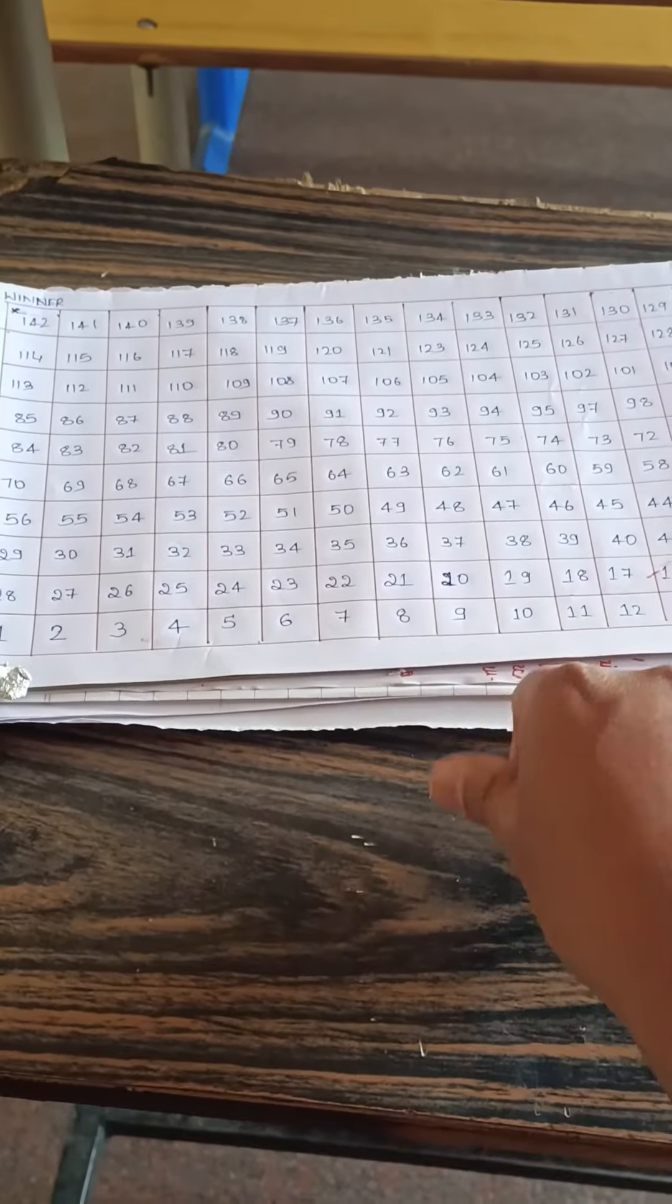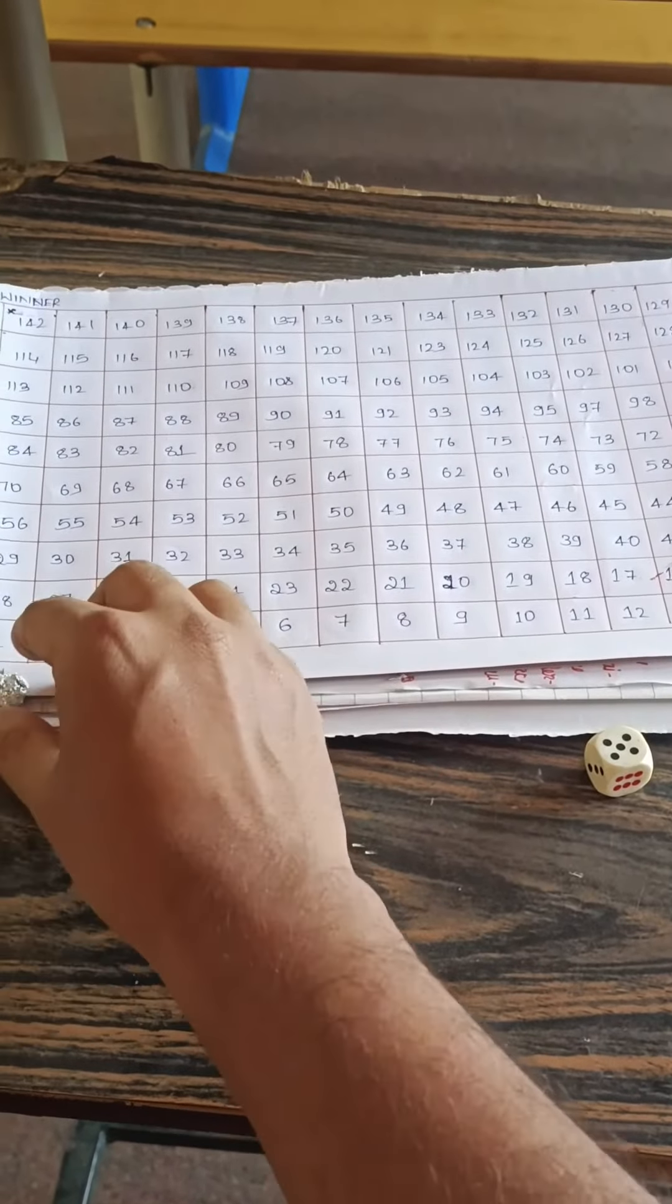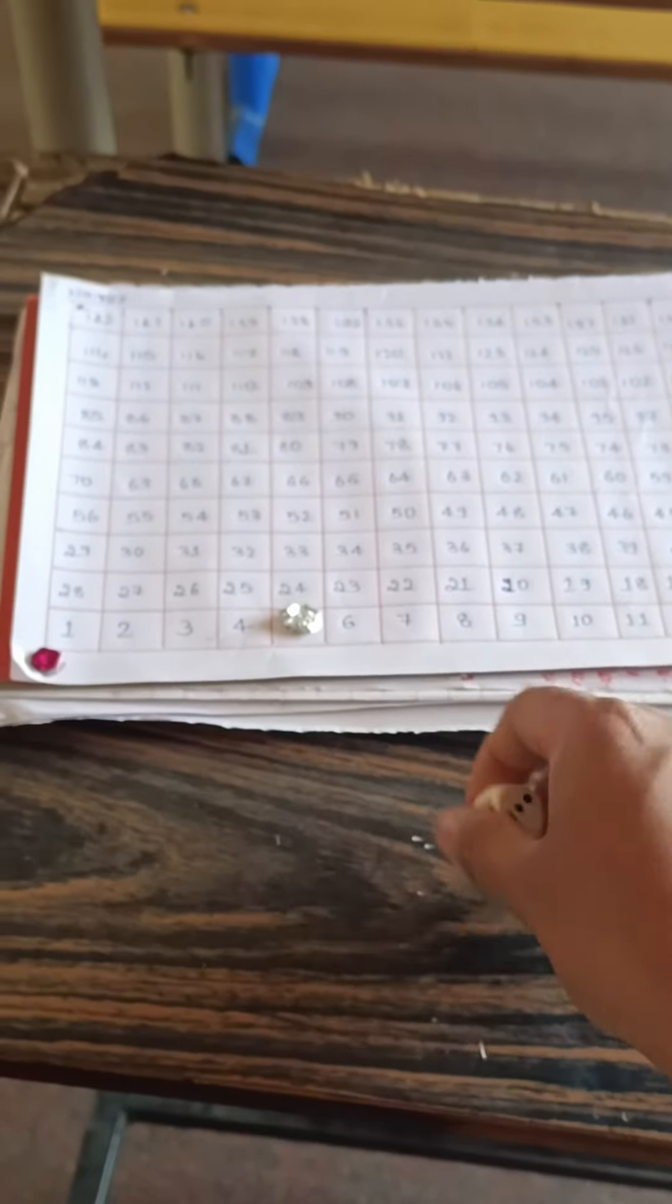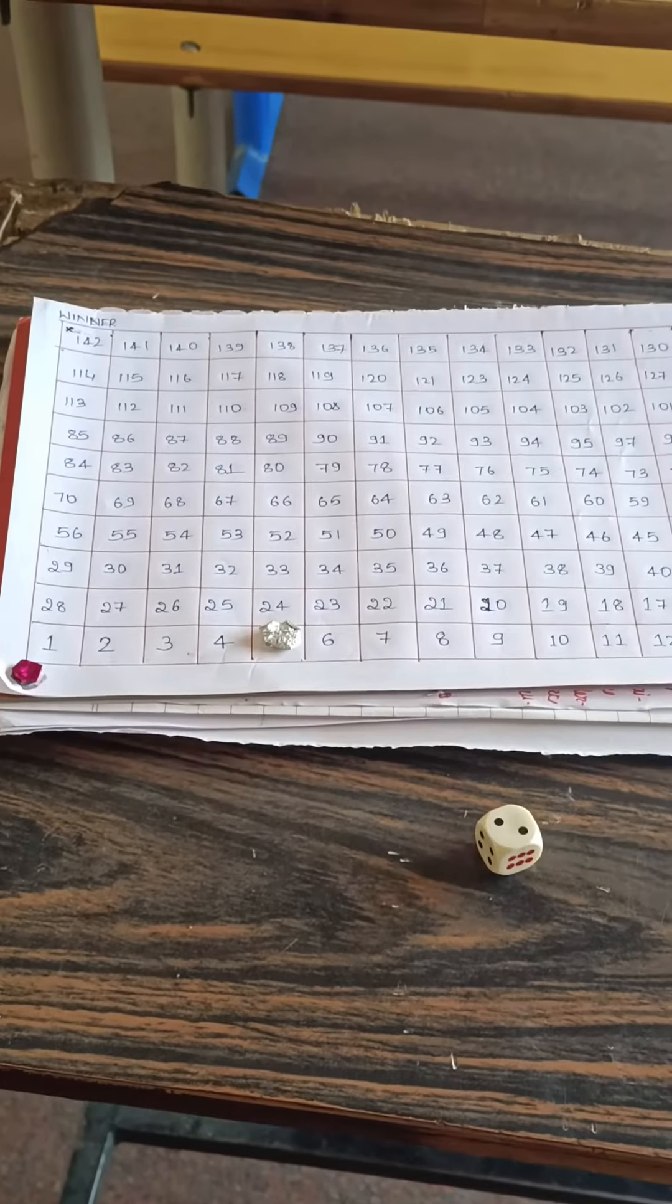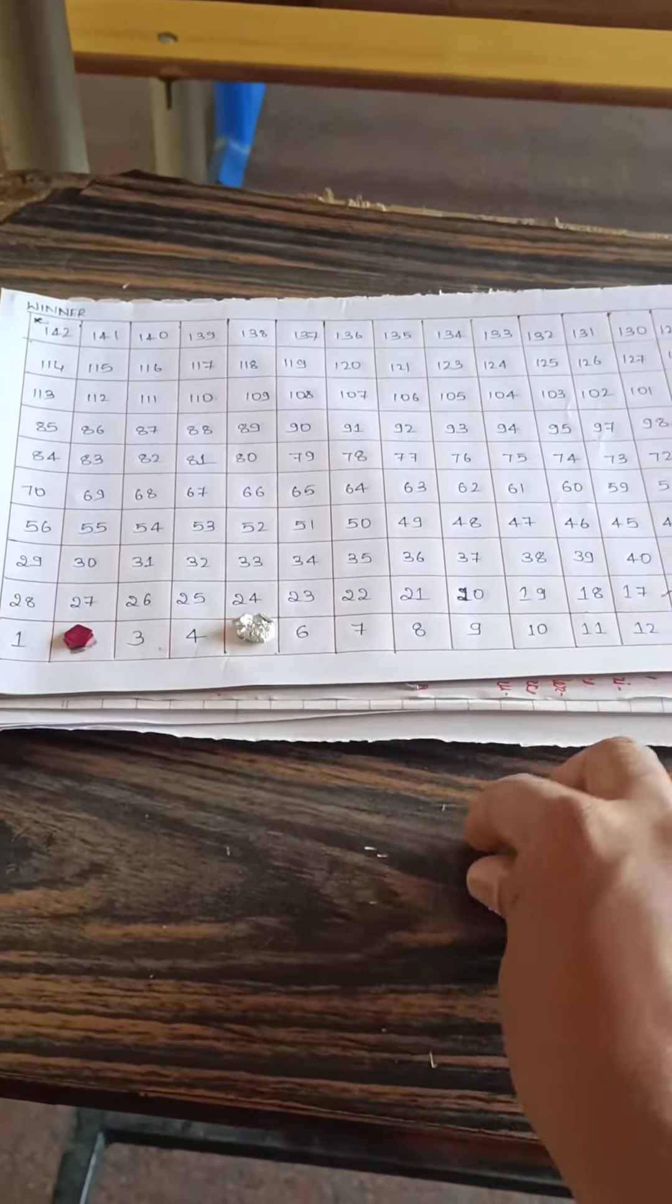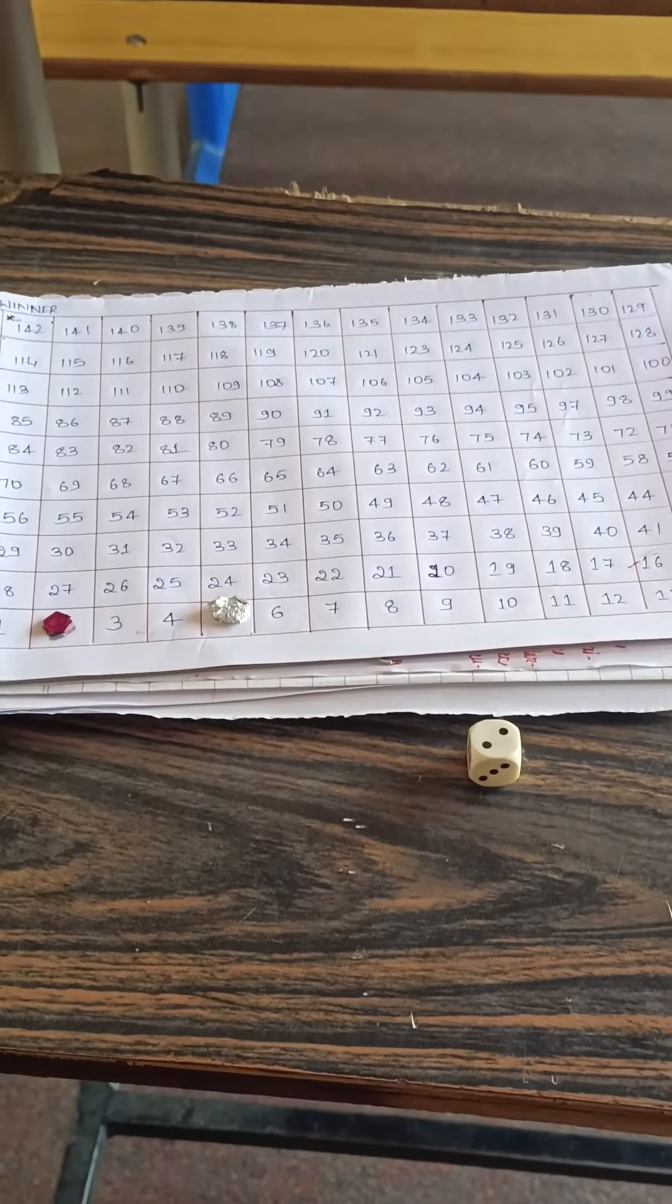The first student rolls the die, he got 5. The second student rolls the die, he got 2. So now again we will continue.